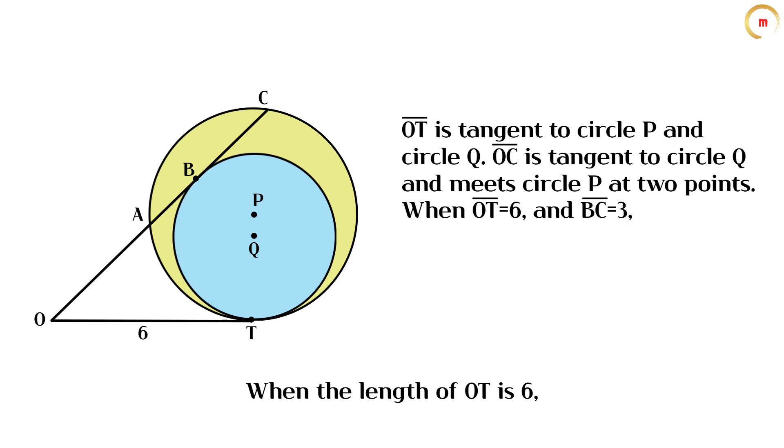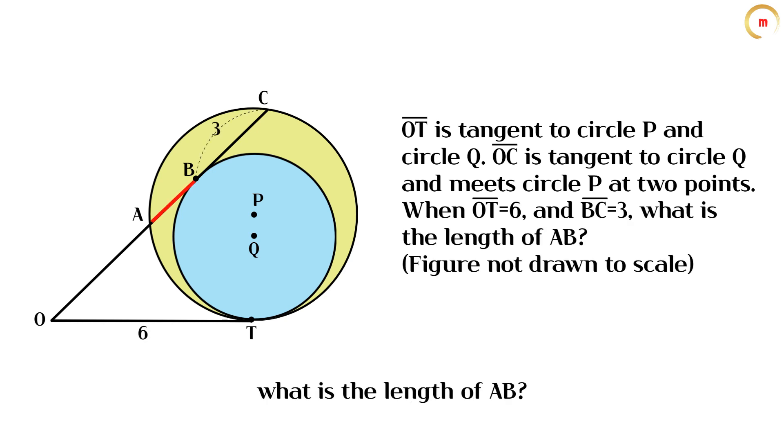When the length of OT is 6, and the length of BC is 3, what is the length of AB?